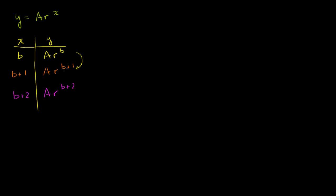So over here, if we look at the factor that y changed by, we could just divide a r to the b plus 1 by a r to the b. And what do we get? Well, you might already recognize you could use exponent rules right here. The a's cancel out.